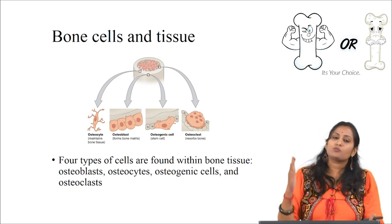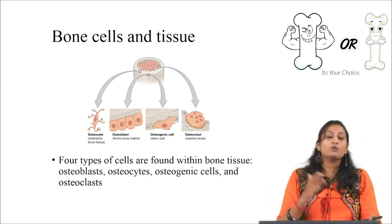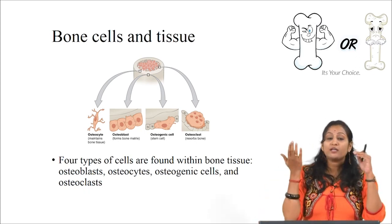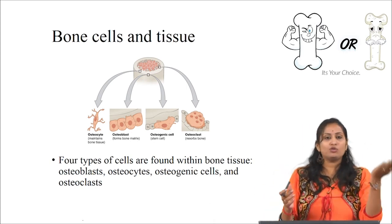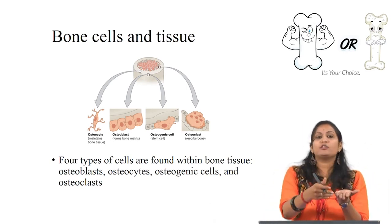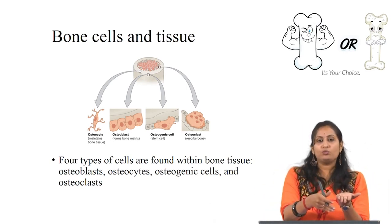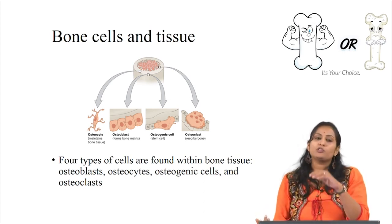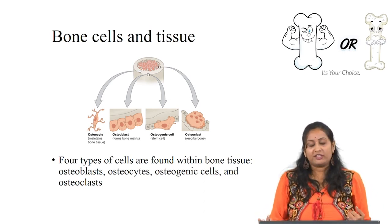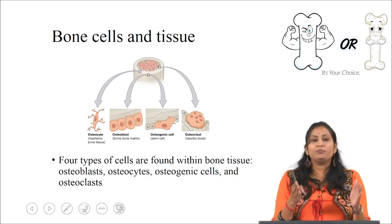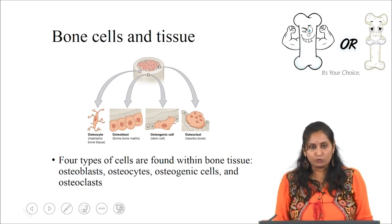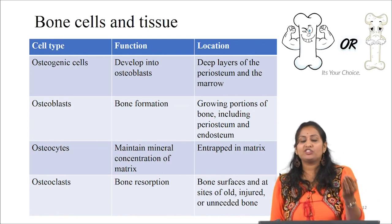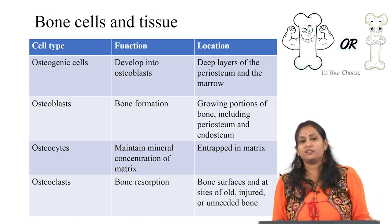This resorption is done by cells called osteoclast cells. Osteoclast cells are responsible for bone resorption. There should be a constant balance between osteoblast cells, which are responsible for the formation of new bone, and osteoclast cells, which are responsible for bone resorption, in order to maintain the structural integrity of the bone. This reviews the cell types, their functions, and locations.